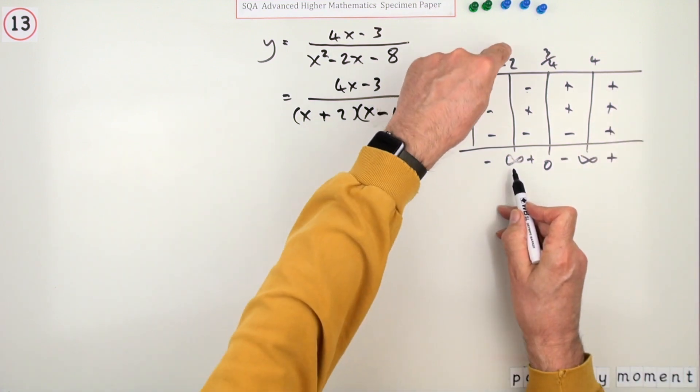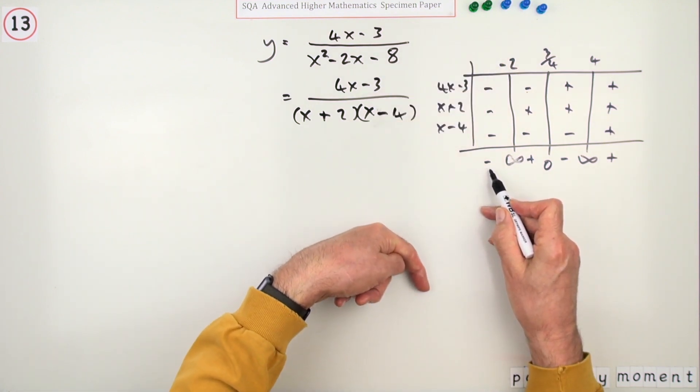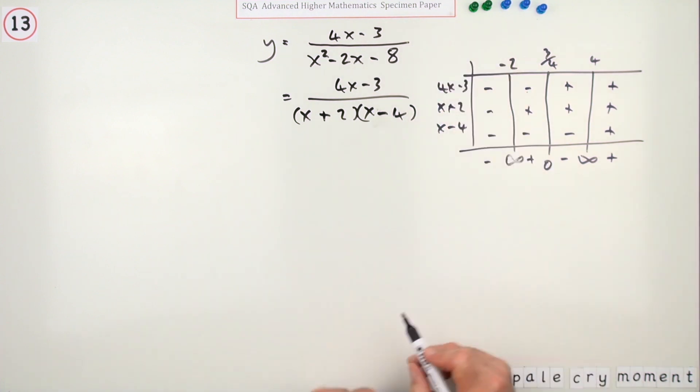So at the asymptote x equals negative 2, it goes down to negative infinity on one side and up to positive infinity on the other. Same with the other one.